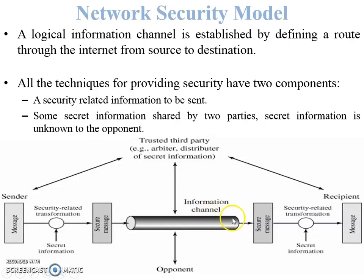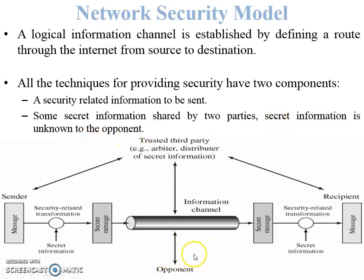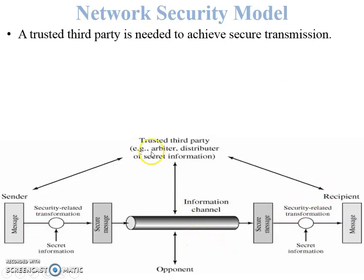The secret information is shared by the two parties — sender and receiver — and is unknown to the opponent, meaning the hacker or attacker. The key is distributed among sender and receiver without the opponent knowing it. A trusted third party is needed to achieve secure transmission.